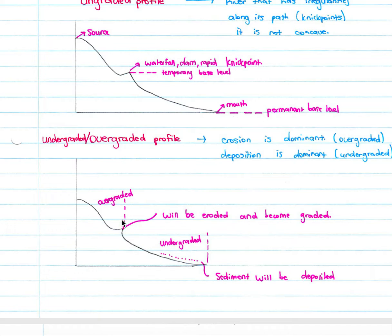Before the neck point, we said that it will try and erode and that is overgraded. When you refer to overgraded, your erosion is dominant. After the neck point, this will try and erode this neck point and become graded, and over here we will have deposition in order to try and get that concave shape, and we refer to that as undergraded where your deposition is dominant. Your sediment will be deposited until we get a concave shape to our permanent base level.